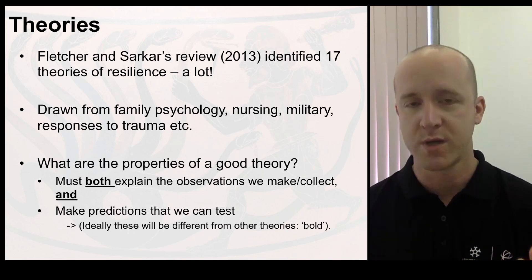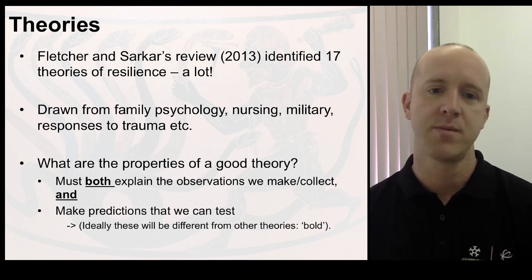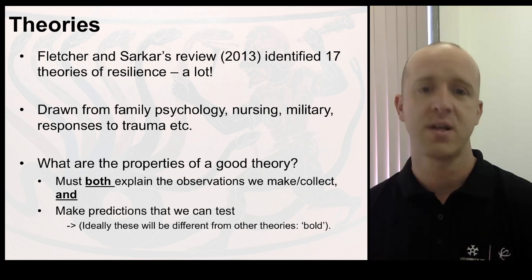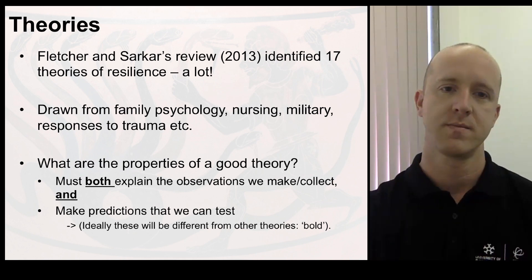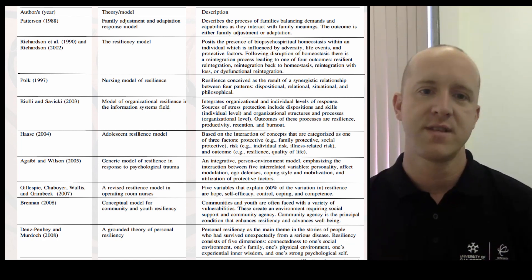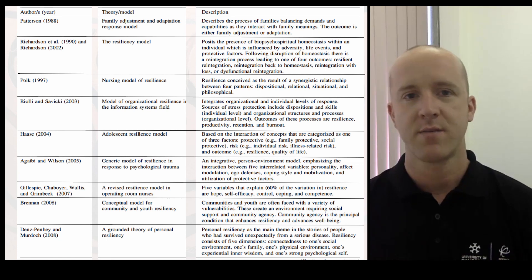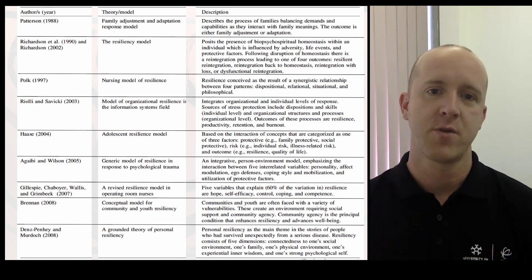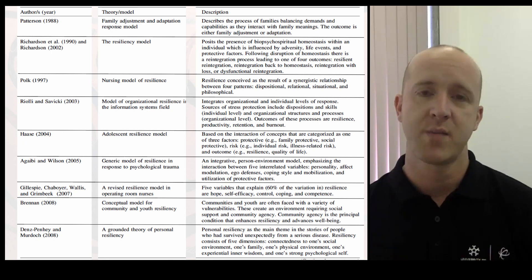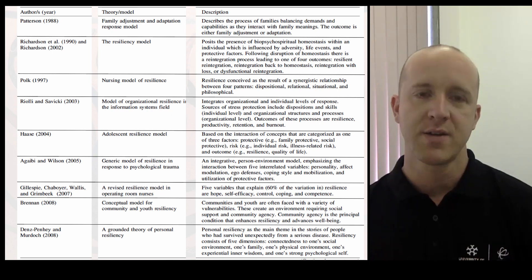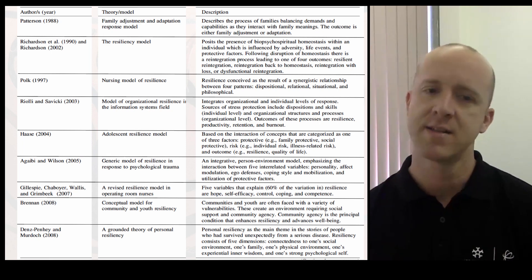We could be talking about things in the next few slides that aren't formal theories because they aren't easily giving us testable hypotheses. You can see there are differences working down that middle column — some theories are derived from family situations, some from organisational and corporate situations, some from nursing, and military comes up as well. That's important because you'd expect different stressors, different coping resources, and different support systems in each context, so you might expect different types of resilience and different theories in each different area.